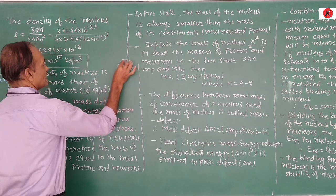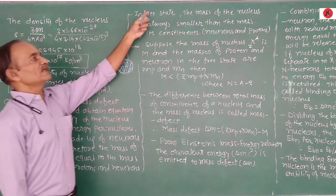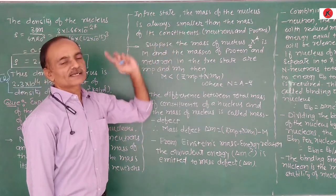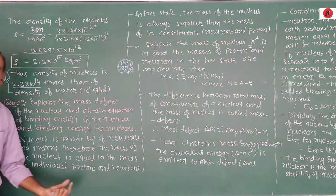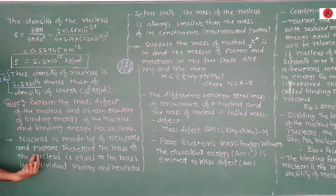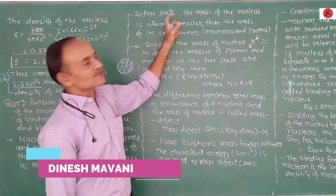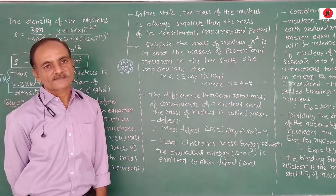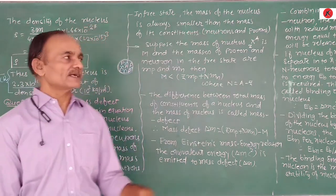The total mass of the nucleons is the sum of mass of protons plus mass of neutrons. But in practice, the mass of the nucleus is always smaller than the sum of masses of its constituent protons and neutrons. Both masses are not equal — the mass of the nucleus is not equal to the sum of the mass of its protons and neutrons.